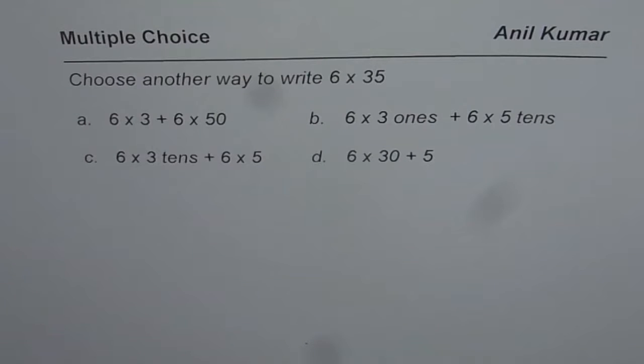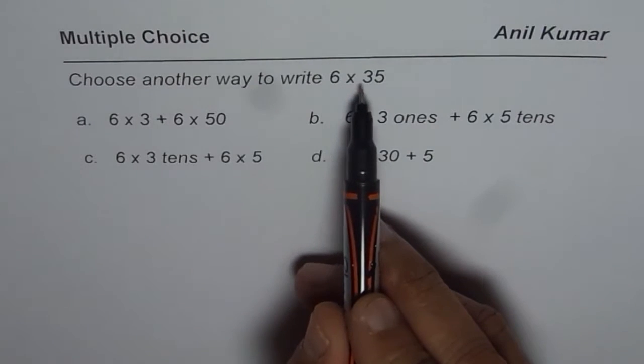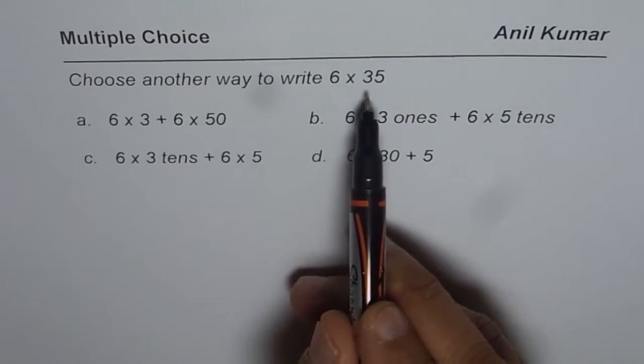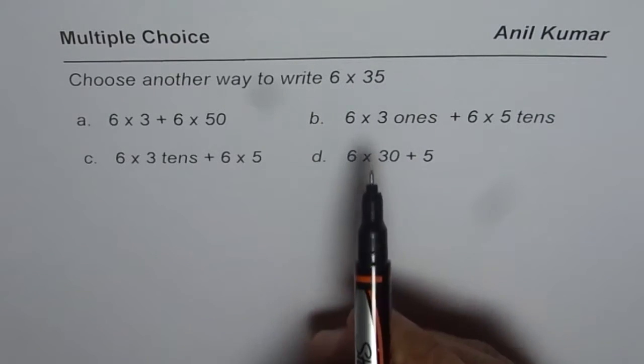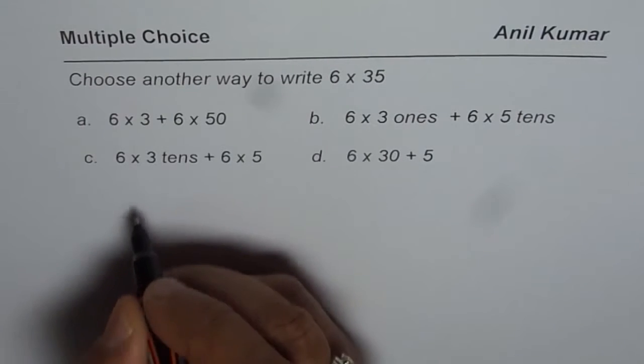You can pause the video, select the correct option, and then look into my explanation. 6 × 35, what does it mean? It's 6 times 30—that's 3 tens and 5 ones. That is 35, right? So let's look into it.